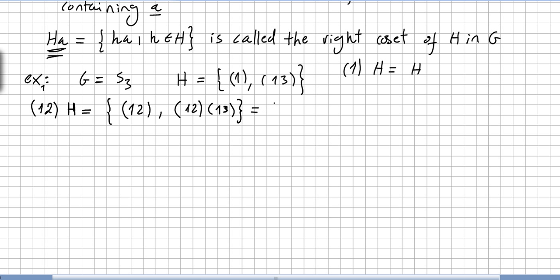This gives us (1 2) and (1 2 3). So this is the coset of H — one of these two elements, one from each cycle. We can write this as the left coset (1 2)H equals {(1 2), (1 2 3)}.